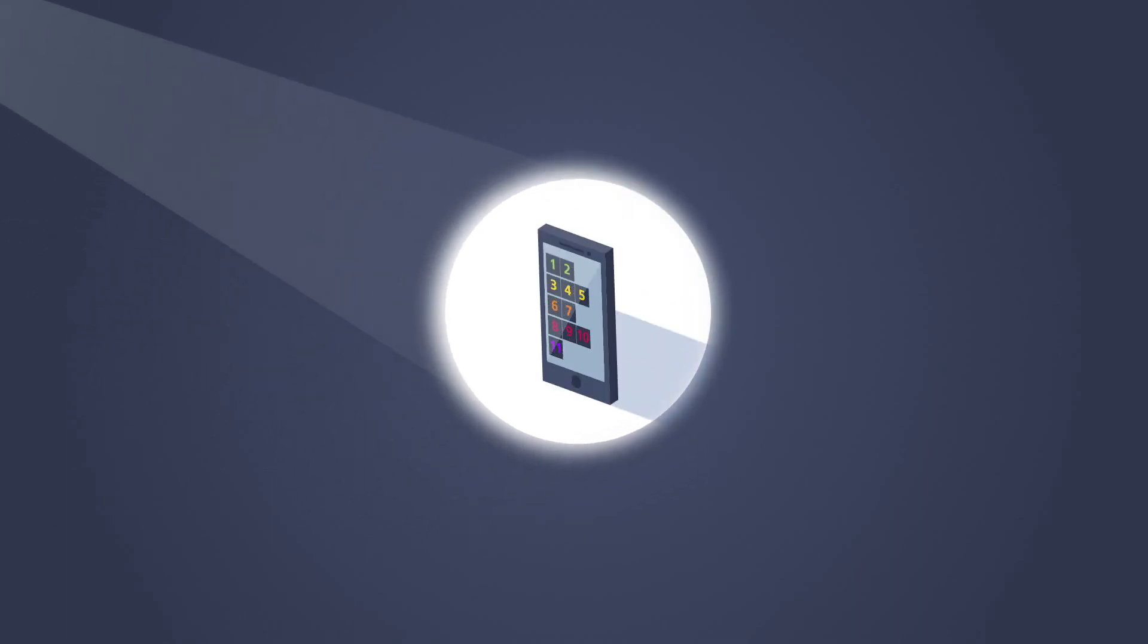To find out what the current UV index is in a certain place, you can download an app, search on the internet, or just find it on the weather forecasts on television or the radio.